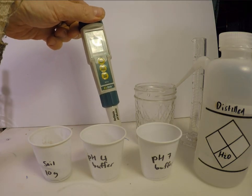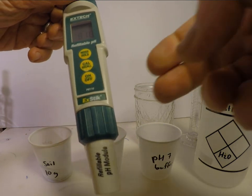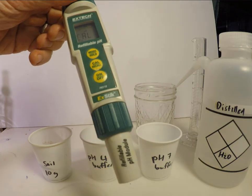The procedure shown here is similar on most handheld meters. After rinsing the probe, the pH meter is put in calibrate mode, here with a single press of the cal button.